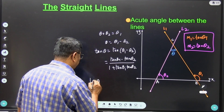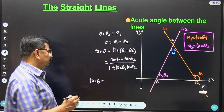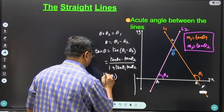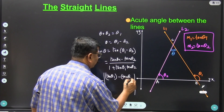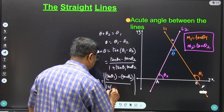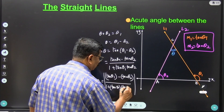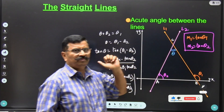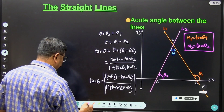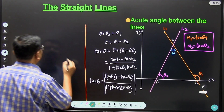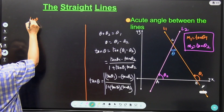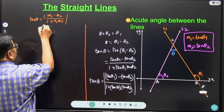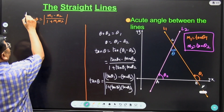Therefore, tan theta equals tan theta1 minus tan theta2 divided by 1 plus tan theta1 times tan theta2. Since theta is the angle between the two lines, it is always positive. We know that tan theta1 is M1 and tan theta2 is M2, hence the angle between the two lines is given by the formula: tan theta equals M1 minus M2 upon 1 plus M1 M2. This is the formula for the angle between two lines.